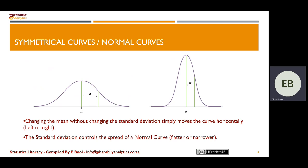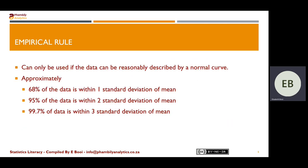Later on in study unit six you also discuss the impact of the mean and the standard deviation on your normal distribution. When you change the values of the mean, your graph will move horizontally from left to right. When you change the values of your standard deviation, your graph will become narrower or flatter, which talks more about the spread of your data. With the empirical rule, this can only be used if the data can be reasonably described by a normal curve.